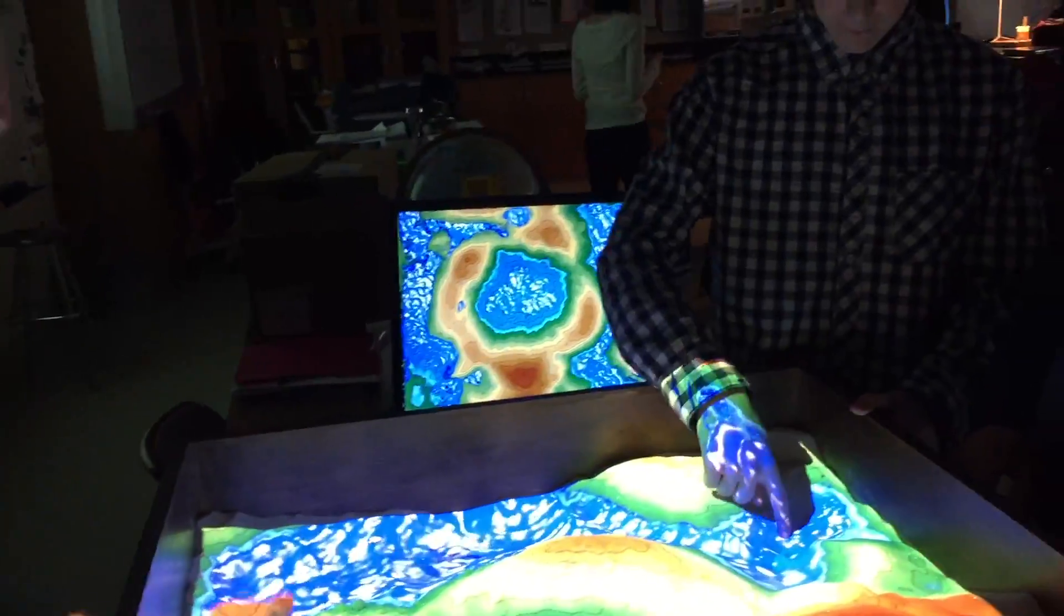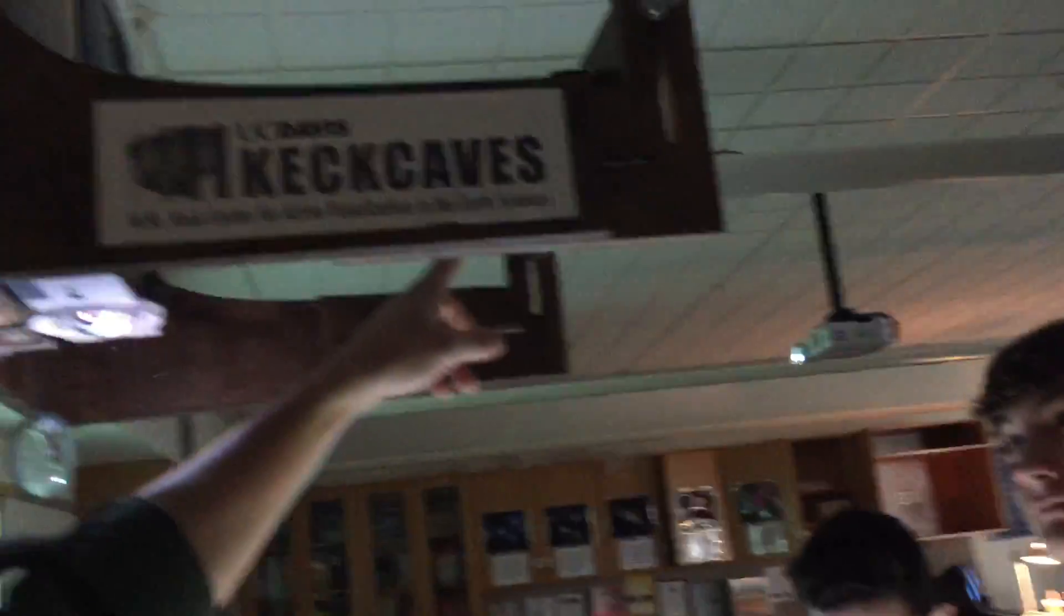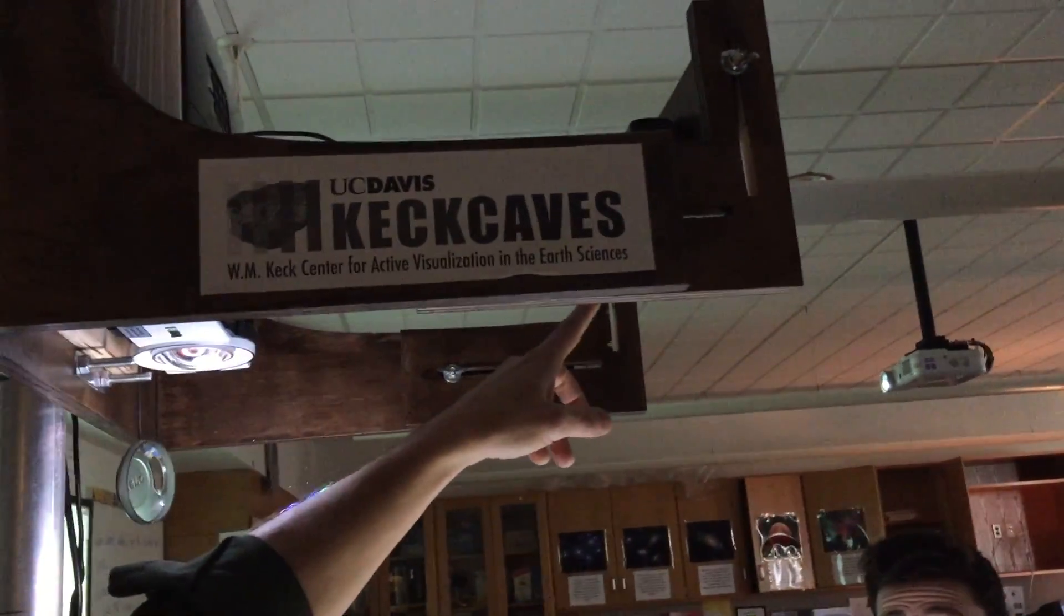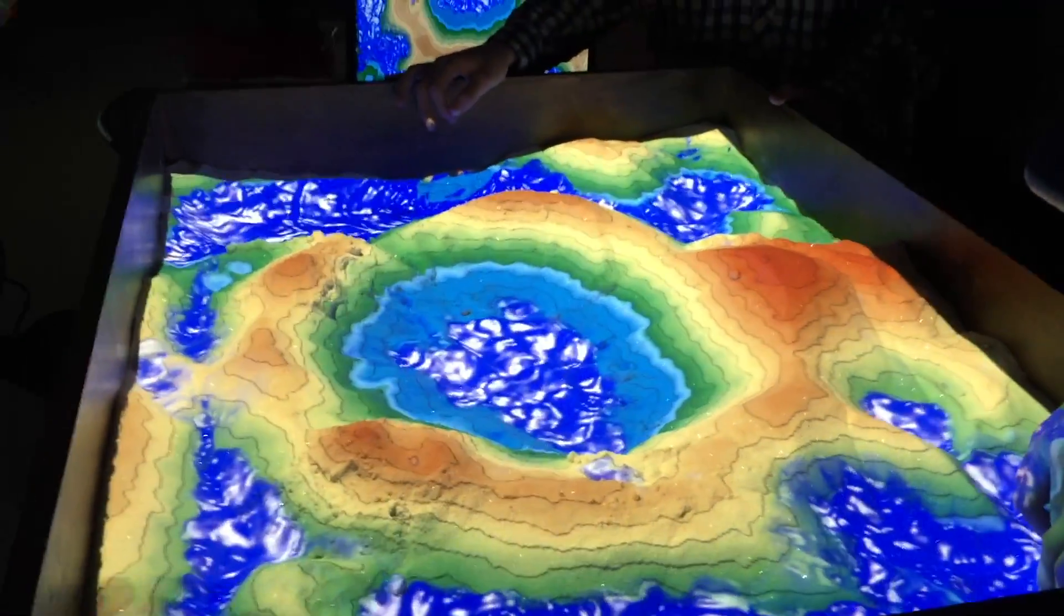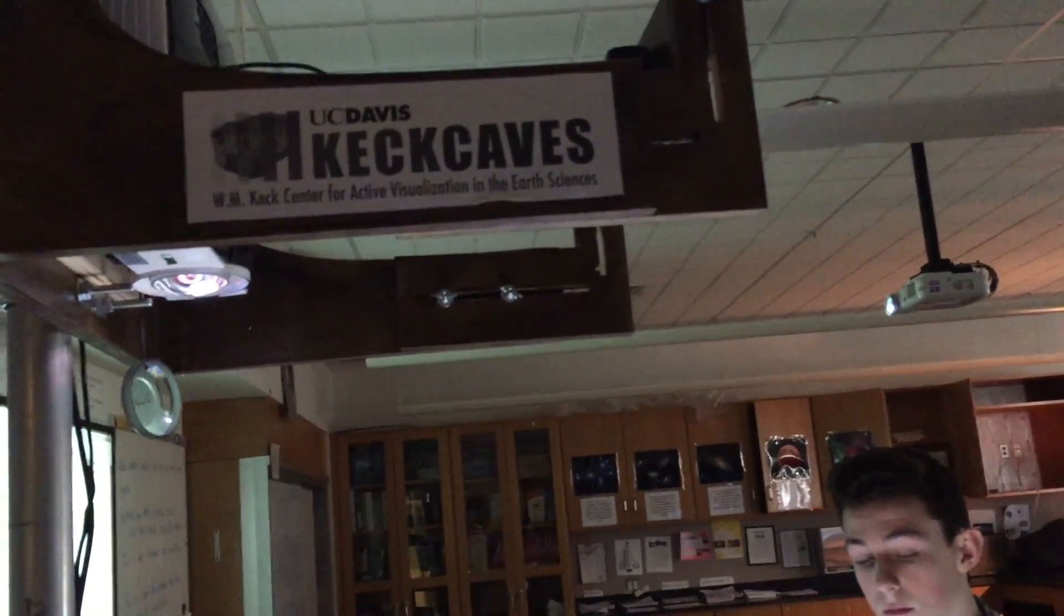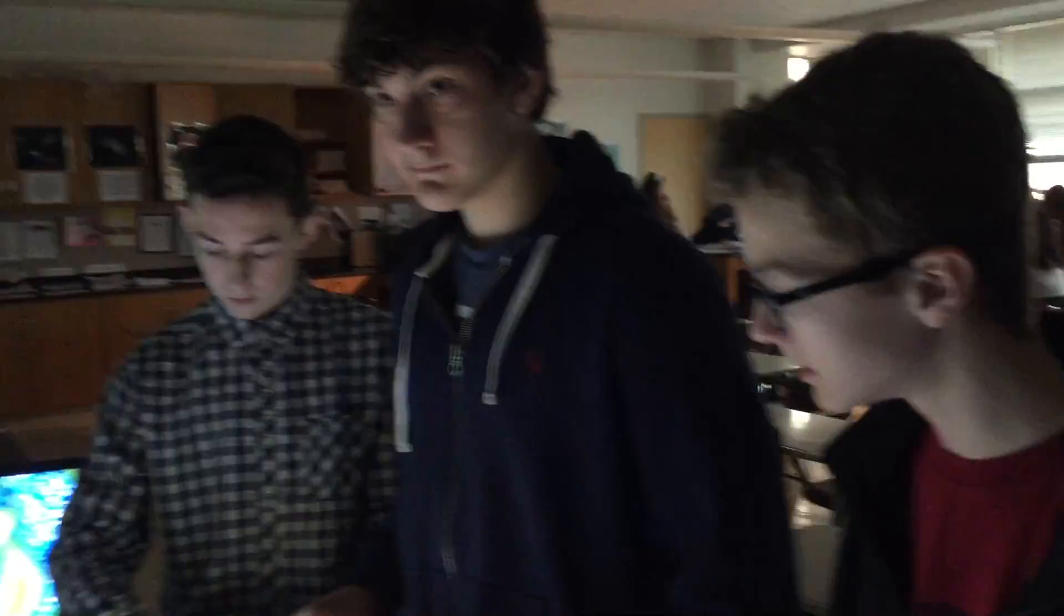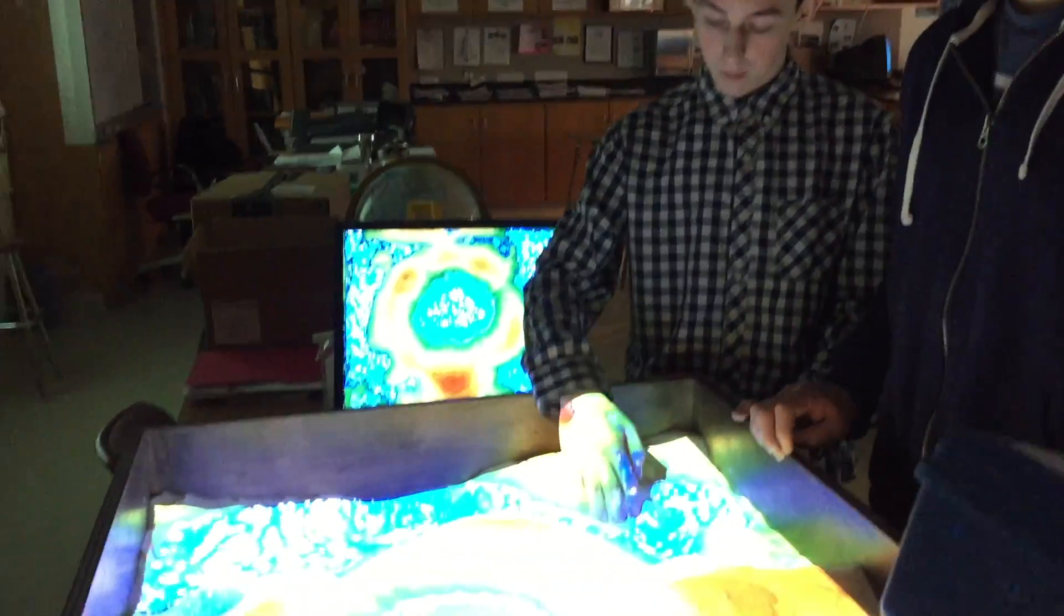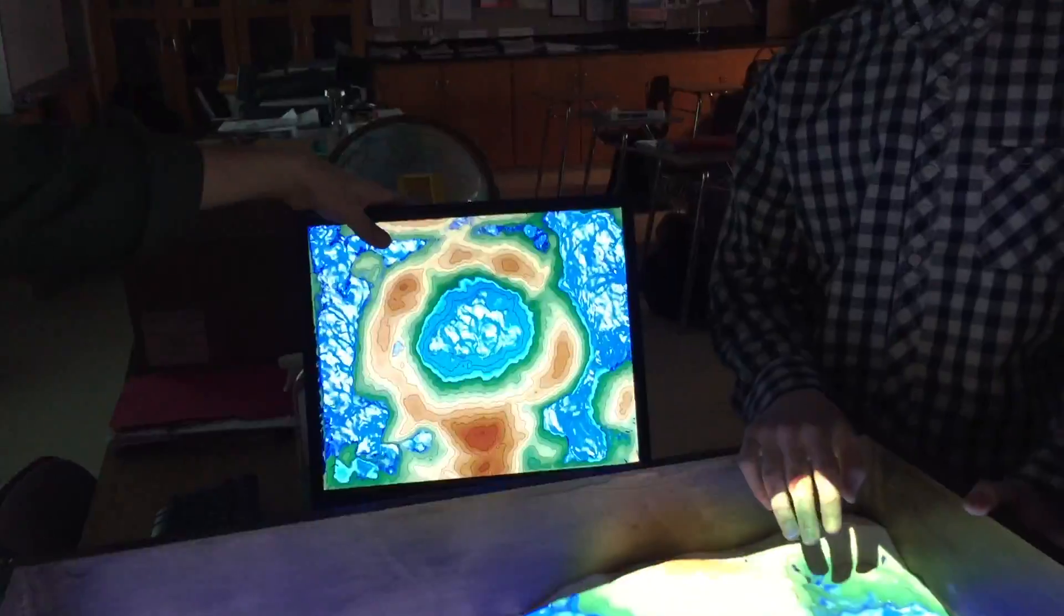So the computer is interfaced with the Sandbox? Yeah, so basically there's a Kinect camera here, an Xbox Kinect camera, which reads the depth changes. There's a depth camera in there. So using infrared light, it measures which parts of the sand are closer and which are farther away. It feeds that data to the computer program, which then processes it and sends it to the projector and to the monitor, dual kind of output here.